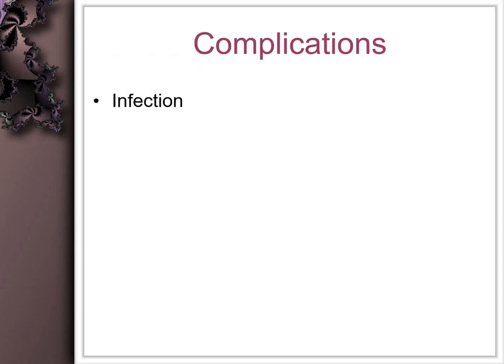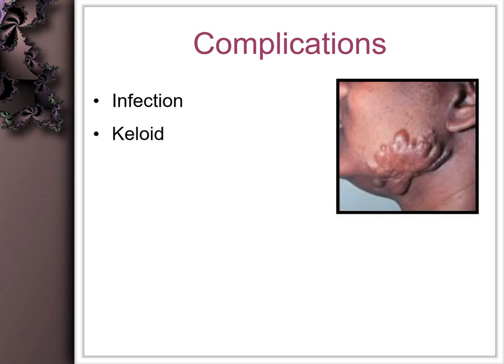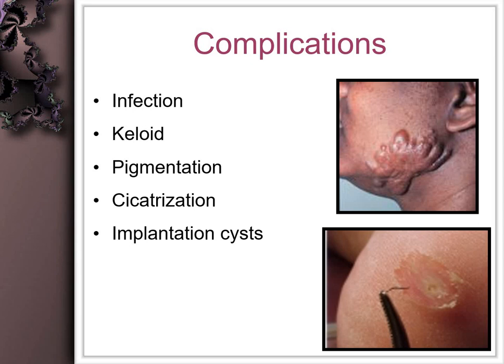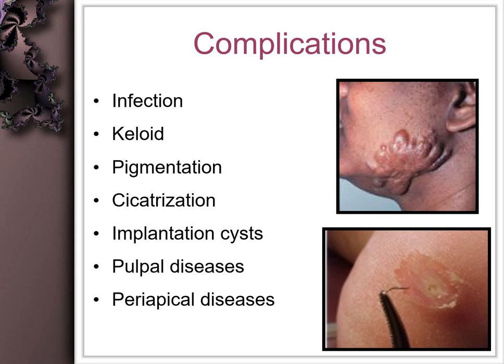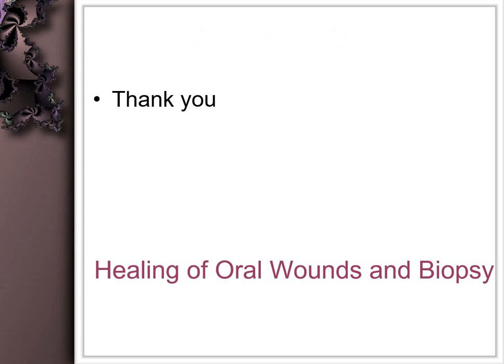Complications of wound healing include secondary infection, which may further delay healing. Sometimes the wound heals with a scar that is hypertrophic and keeps growing without resolution — this is called a keloid. Pigmentation may develop due to altered melanocyte stimulation. Cicatrization, or scar with abnormal patterns, can also be seen. Sometimes superficial epithelium gets incorporated inside the tissue, giving rise to secondary cysts called implantation cysts. Pulp and periapical diseases may also be seen secondary to wounds in the head and neck region.